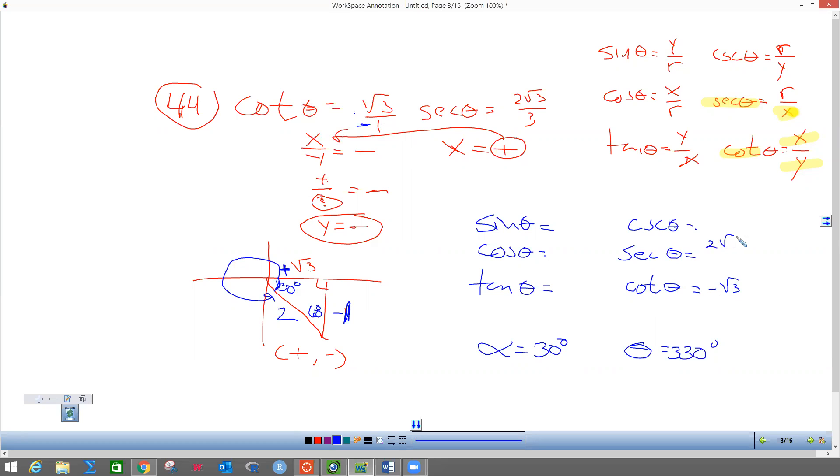Now you have some options here. You can just take this thing and flip it upside down and rationalize it, and this is the right answer here. Or you can go back to your unit circle and do tangent. It's negative 1 over radical 3, and then rationalize it, and you get the same answer.